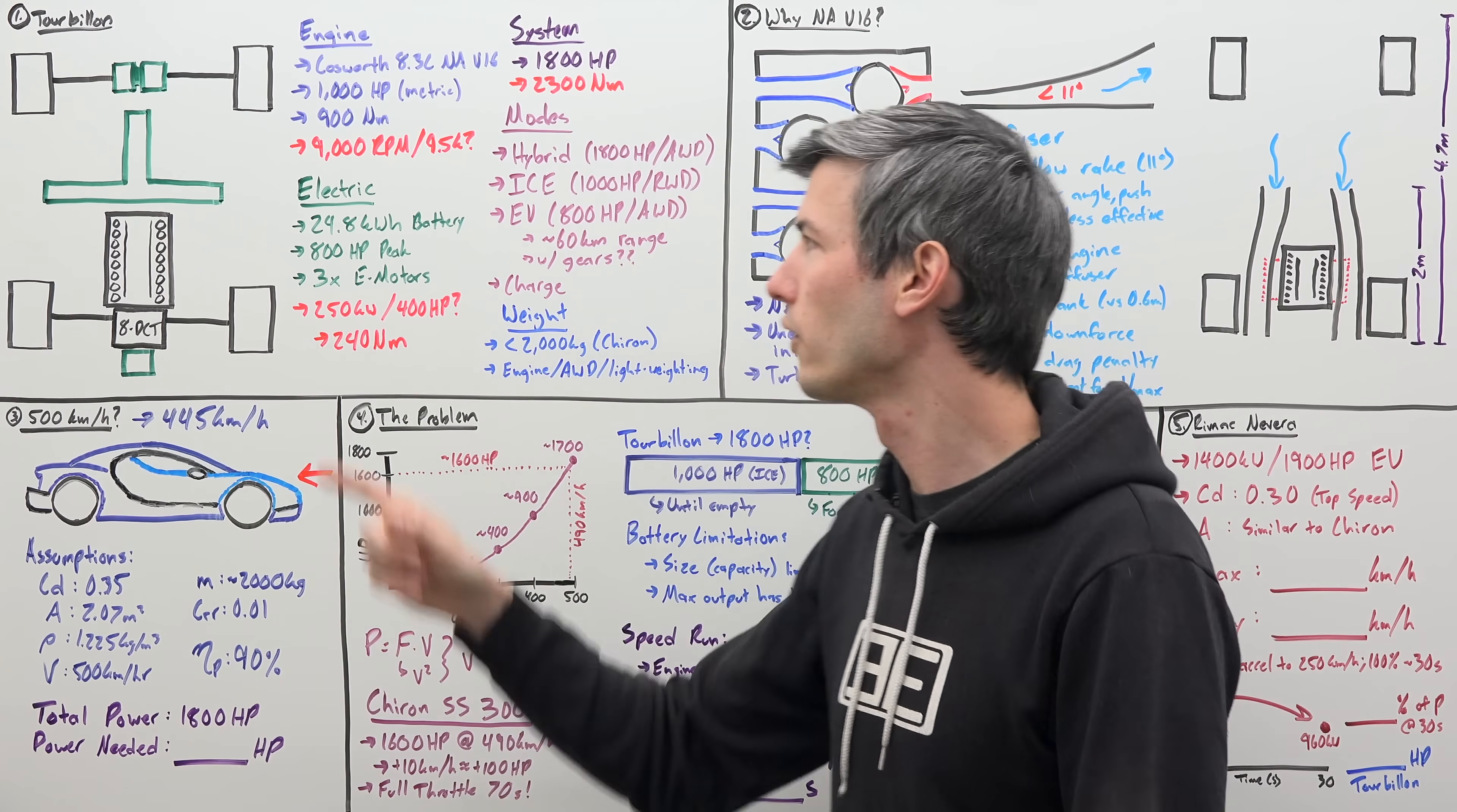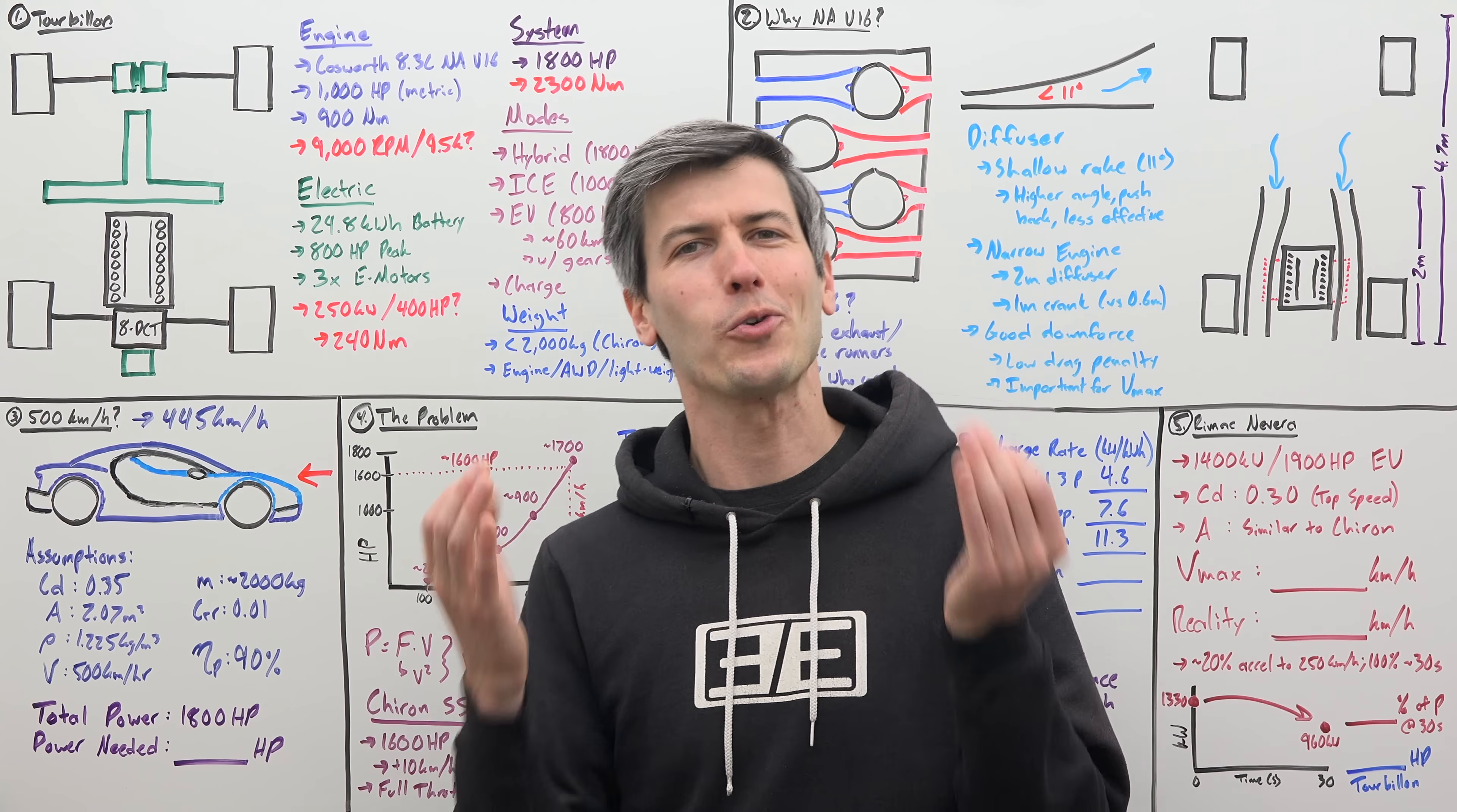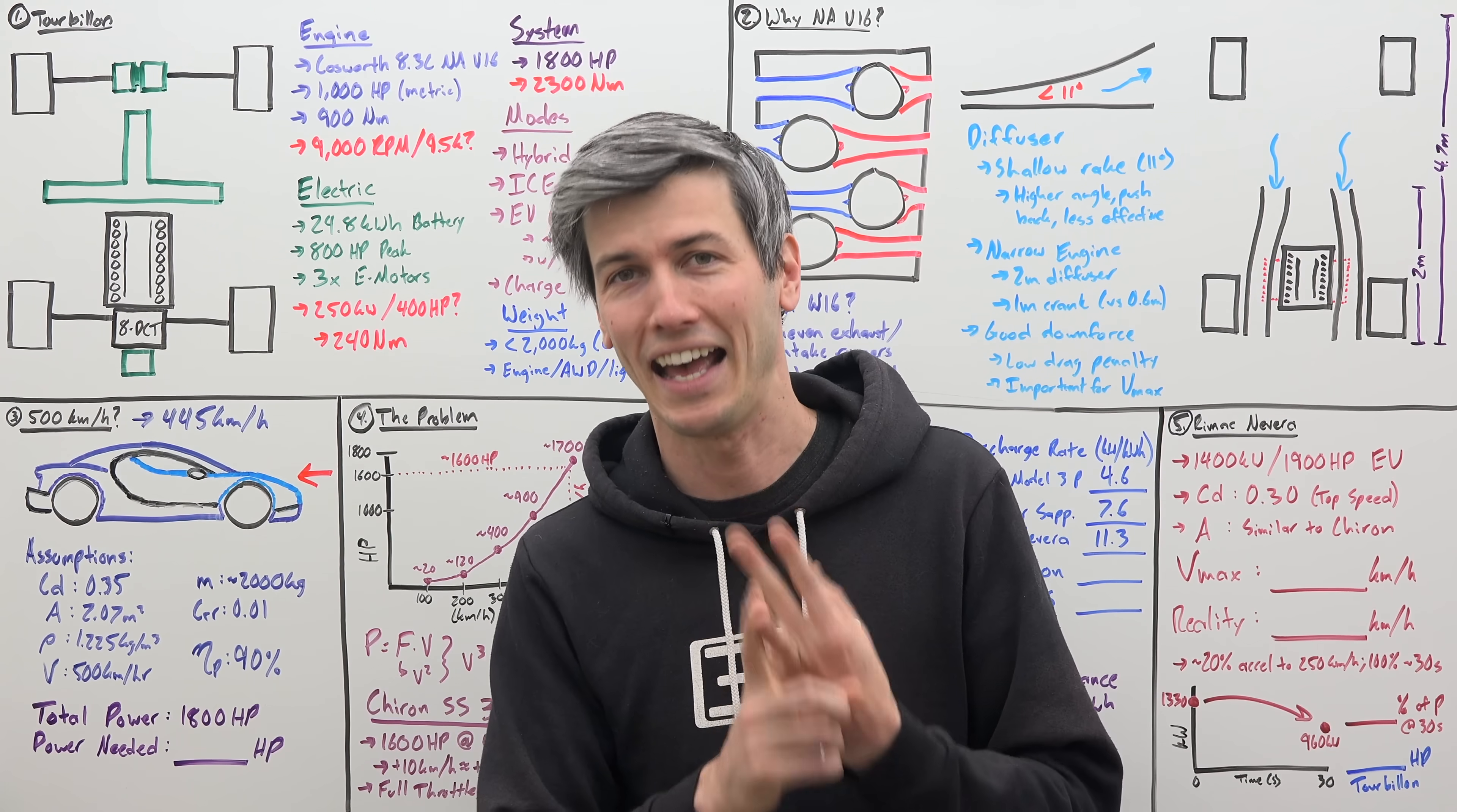And then finally, it has a charge mode, so you can use that engine to spin up this electric motor and put some energy back into the battery pack. So electric motors, big battery, big engine. Surely this thing is going to weigh more than the Chiron, right? Wrong. Incredibly, this is going to weigh less than 2,000 kilograms, and it's going to weigh less than the Chiron, despite having a larger engine, three electric motors, and a battery pack added.